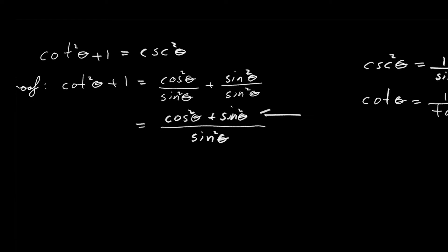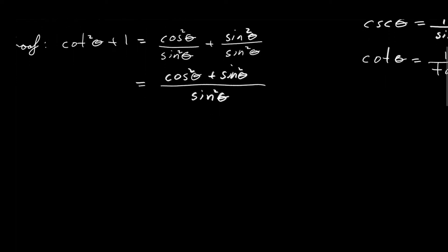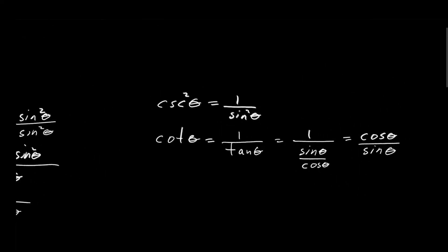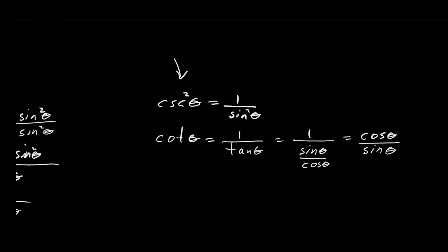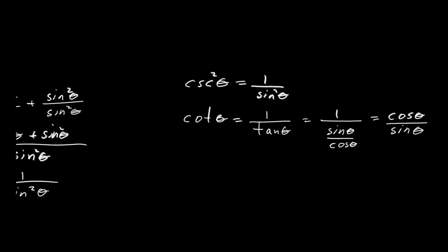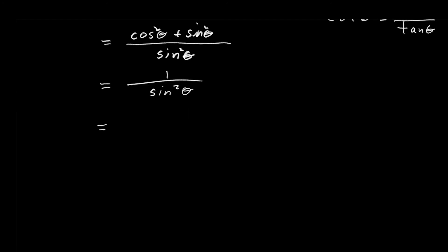Now the numerator is the Pythagorean identity. Remember, the Pythagorean identity says that sine squared of theta plus cosine squared of theta equals 1, so that numerator is 1. We're just applying trigonometric identity number 3 to the numerator, which we've already proven. Since cosecant of theta is 1 over sine of theta, the expression 1 over sine of theta squared is exactly the cosecant of theta squared — and that completes the proof.